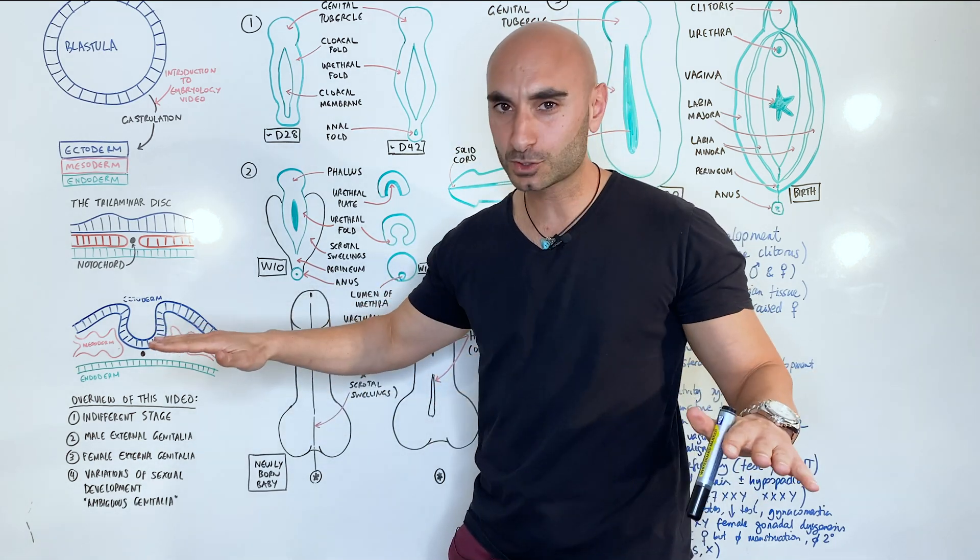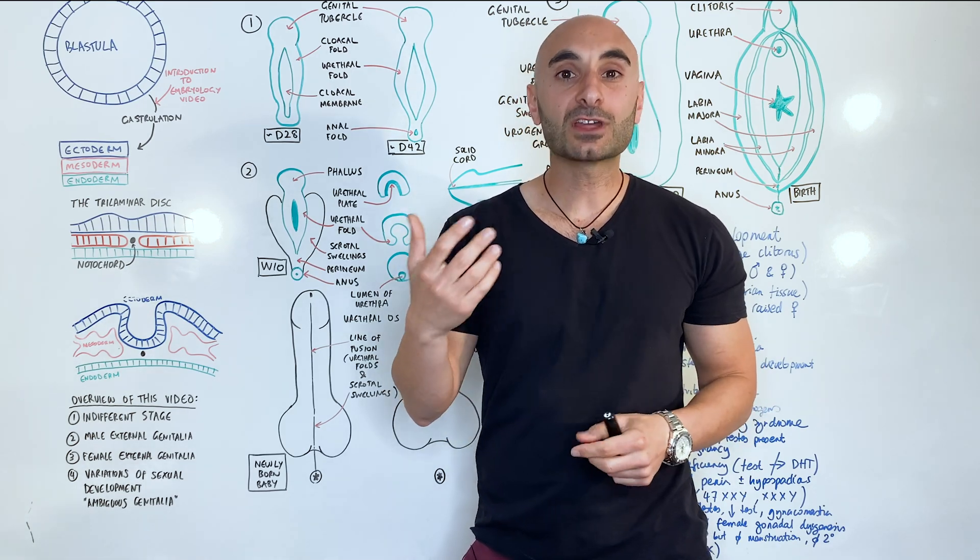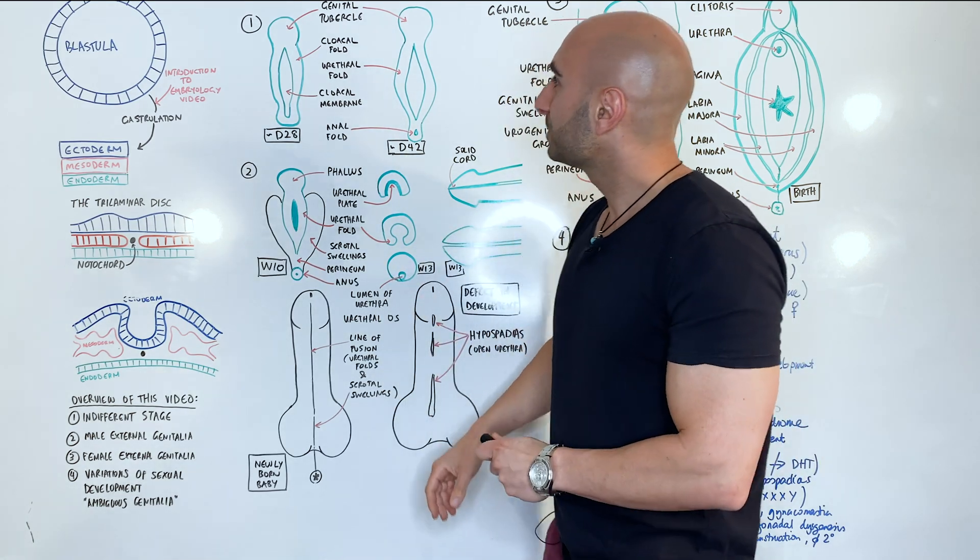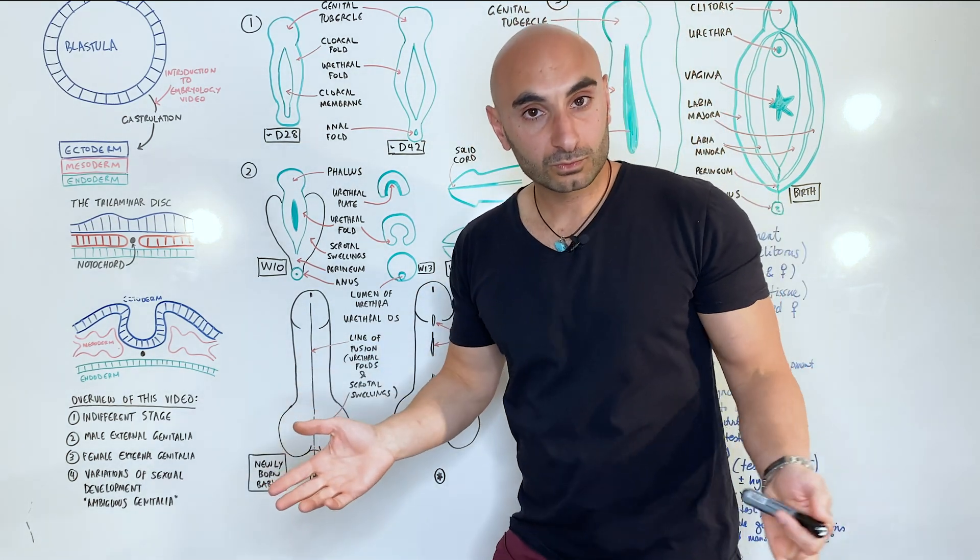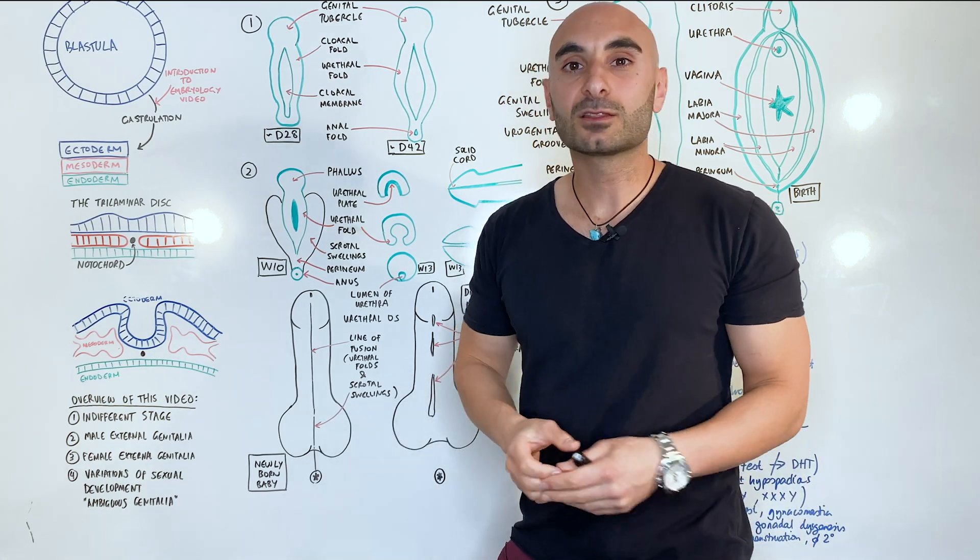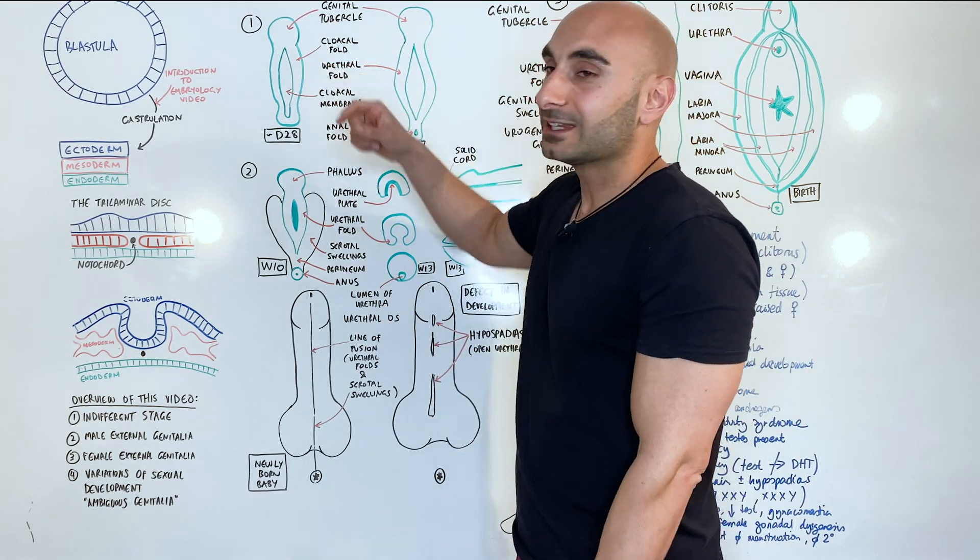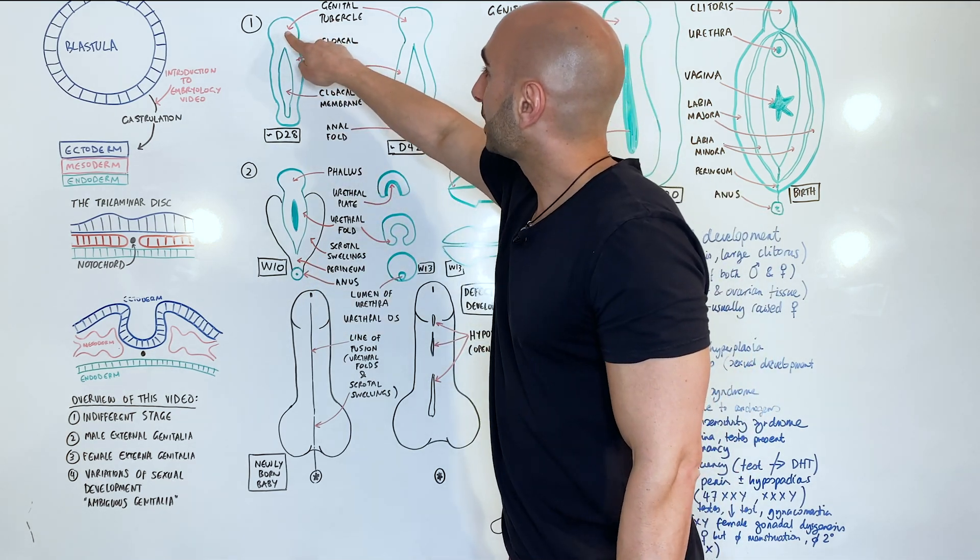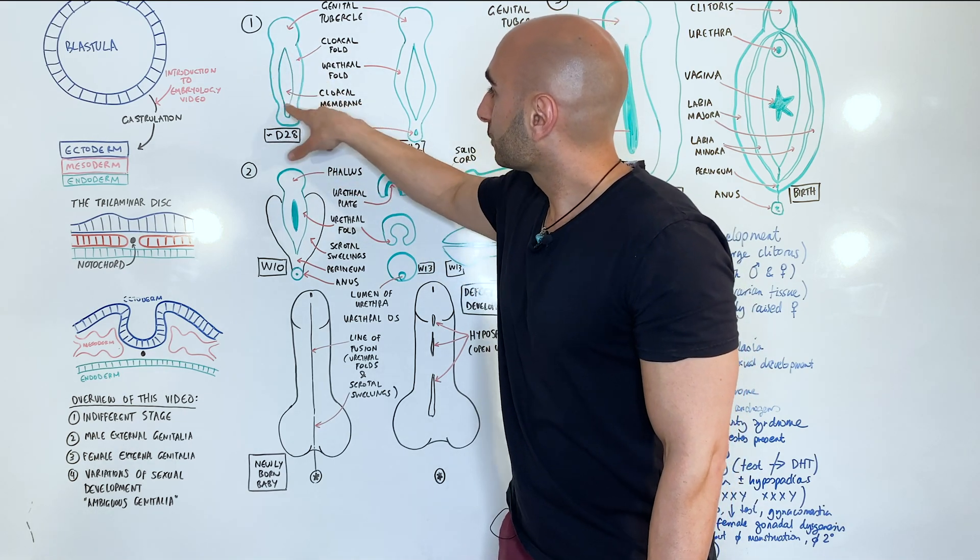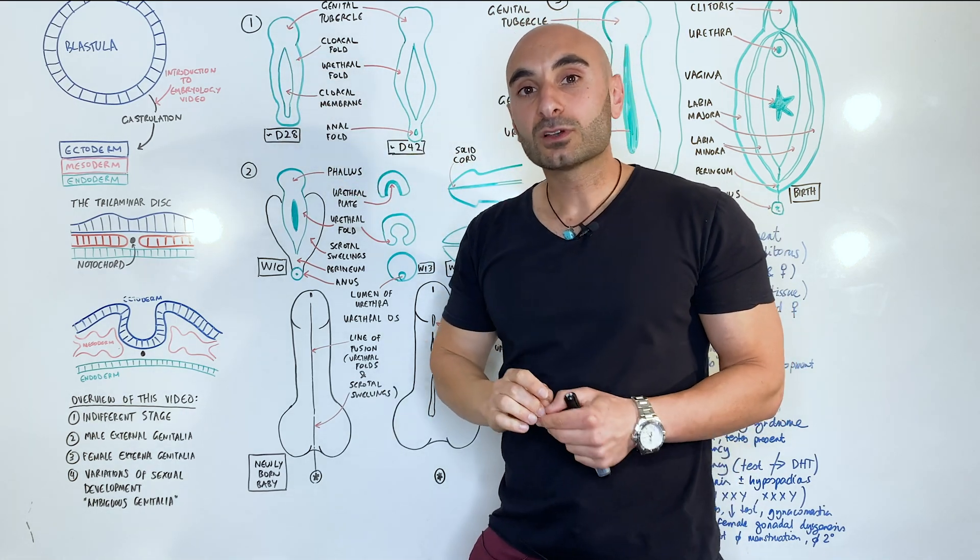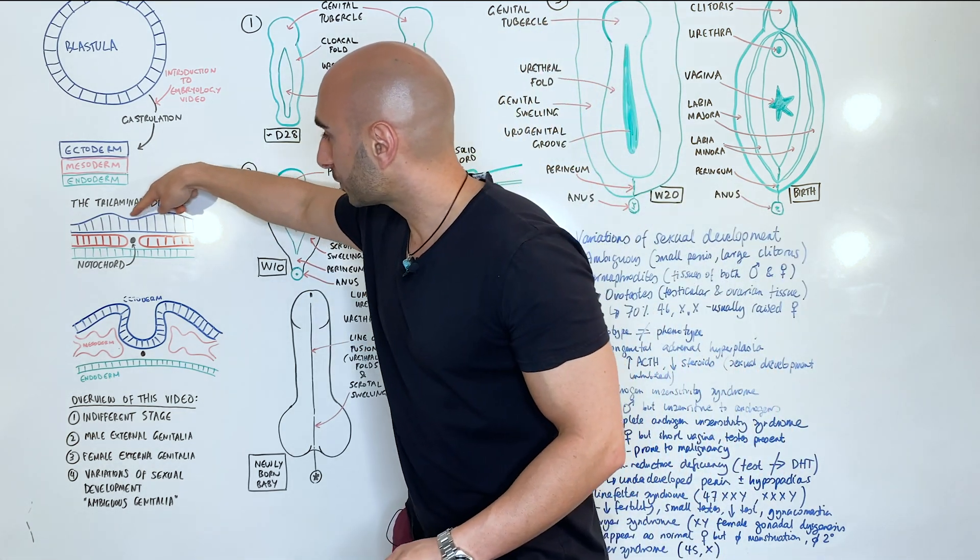And of course it folds and differentiates and becomes your whole person. Okay, that's a very quick introduction to embryology. Now let's talk about the external development, the development of the external genitalia. Let's begin with the indifference stage. So before week seven, we kind of don't know what sex the growing fetus is.